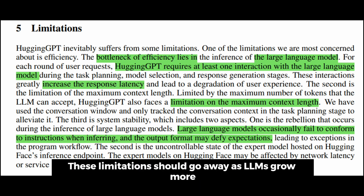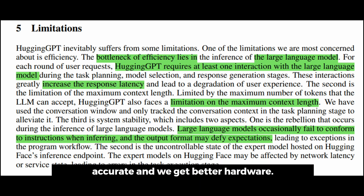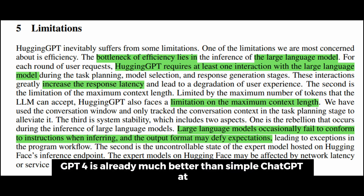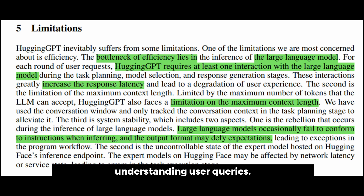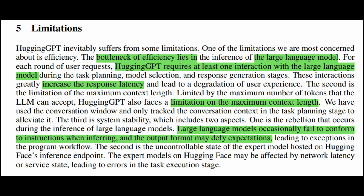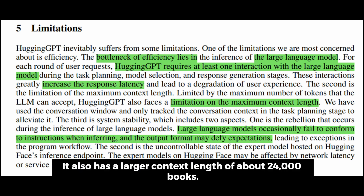These limitations should go away as LLMs grow more accurate and we get better hardware. GPT-4 is already much better than standard ChatGPT at understanding user queries, and it also has a larger context length of about 24,000 words.